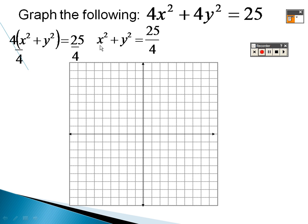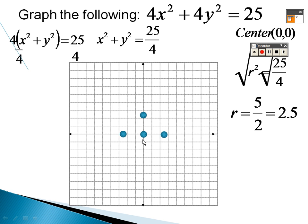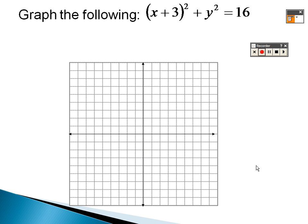In standard form, x minus h and y minus k — here it's x minus 0 squared and y minus 0 squared, so the center is (0, 0). The radius is the square root of 25/4, which is 5/2 or 2.5. Go out 2.5 in each direction — right, left, up, down — mark the points and connect them to draw the circle.